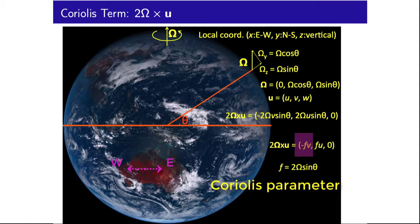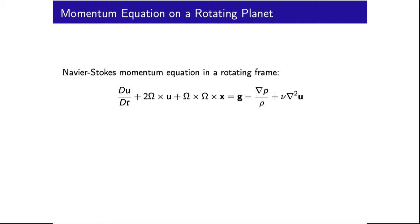What is interesting to note here is that the east-west component of the Coriolis term depends on the north-south velocity. Likewise, the north-south component depends on the east-west velocity. Also, the Coriolis term is a function of the sine of latitude, meaning it changes sign across the equator. As we will soon see, this leads to atmospheric storms, ocean gyres, and many other flows rotating in opposite directions for the northern and southern hemispheres.